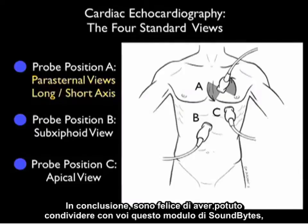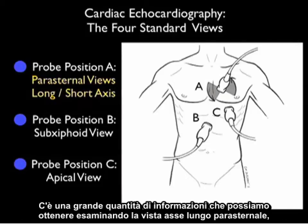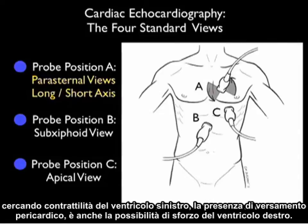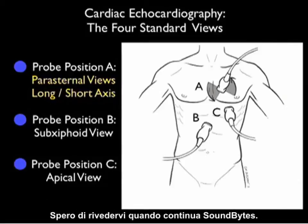In conclusion, I'm glad I could share with you this SoundBytes module going over part one of the parasternal long axis view of the heart. There's a great deal of information we can gain from this view, including left ventricular contractility, the presence of a pericardial effusion, and the possibility of right ventricular strain. I hope to see you back as we cover further modules going over the parasternal views, the subxiphoid views, and the apical views — so I'll see you back as SoundBytes Cases continues.